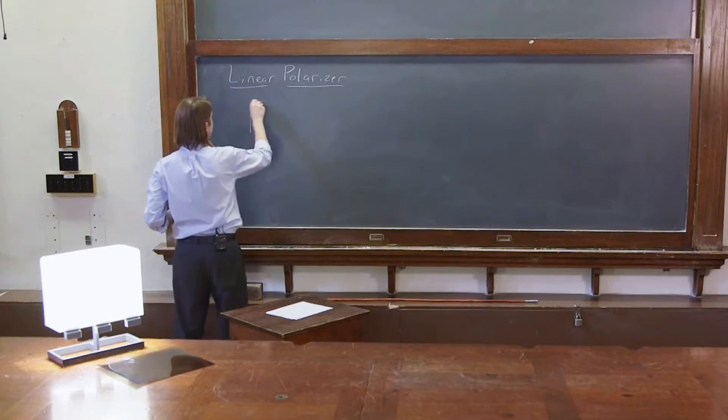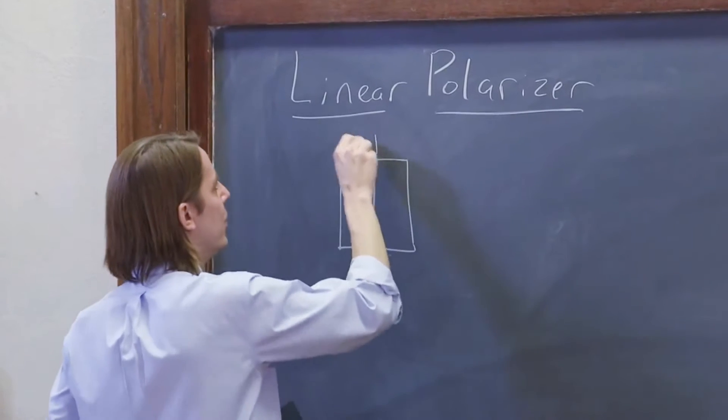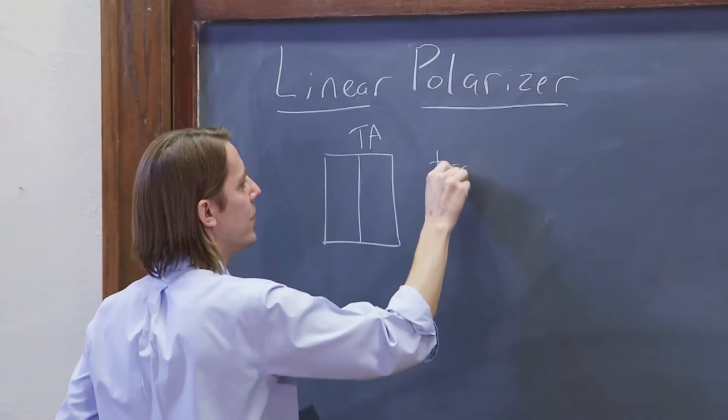So let's see how we would describe this thing. It has an axis like this that's called the TA for the transmission axis.